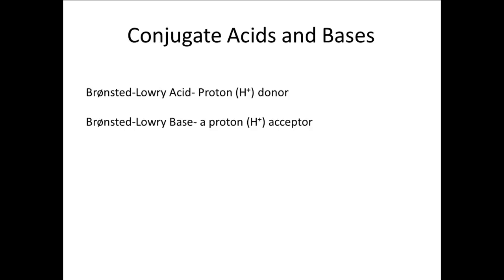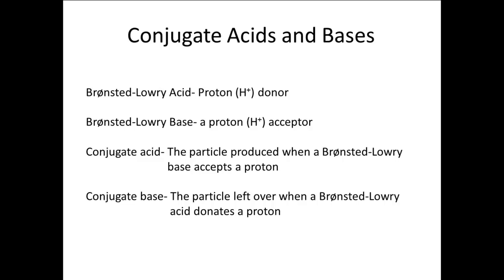When a Brønsted-Lowry acid donates its proton to a Brønsted-Lowry base, what we then have are called a conjugate acid and a conjugate base. The conjugate acid is the particle produced when a Brønsted-Lowry base accepts a proton. The conjugate base is the particle left over when a Brønsted-Lowry acid donates a proton.